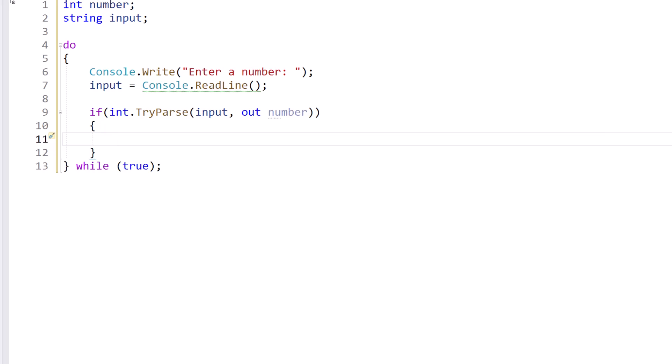So what's going to happen here is the try parse method is going to run. It's going to receive the string input that came from the console. And if it is successful, the number variable will have the integer value in it. If it fails, the number variable will not have data in it and we can't use it.